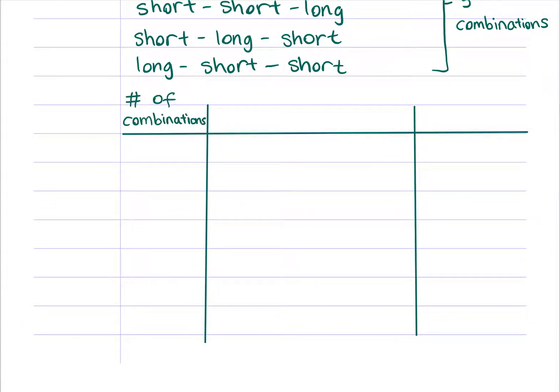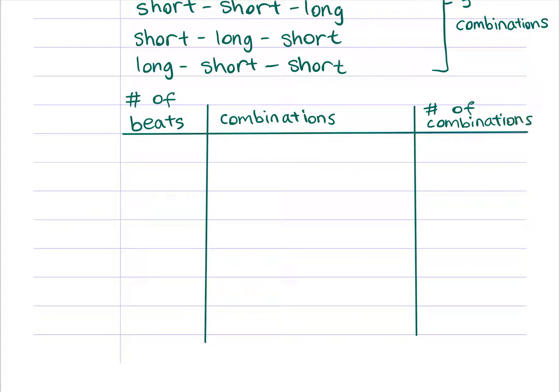Let's make a table, so we can see this pattern more clearly. For a one-beat rhythm, there's only one combination, one short. For a two-beat rhythm, there are two combinations, two shorts or one long.